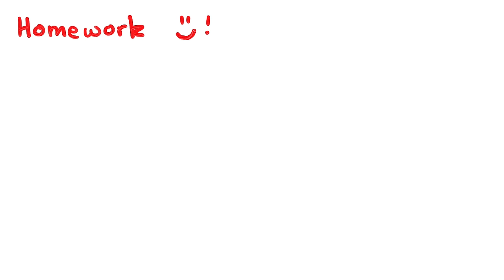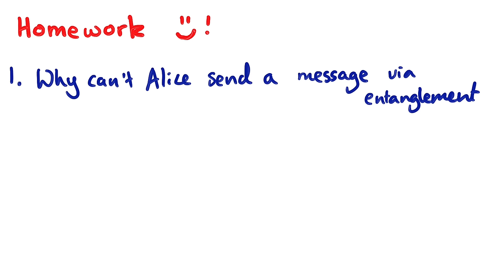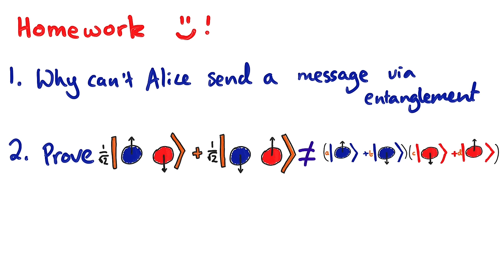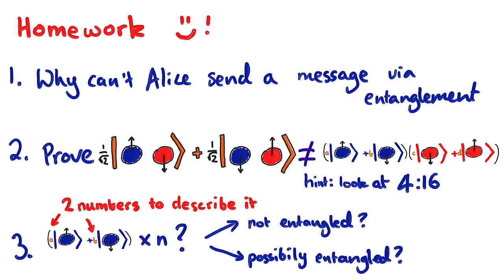So here are some homework questions for you to try and answer in the comments. Firstly, explain why Alice can never send any messages through this setup. Second, this one is to practice working with wave functions of several objects. Prove mathematically that it's impossible to write our state as two separate states for the electron and positron. And third, this one is very relevant to quantum computing. If you have just one electron or positron, you only need two numbers to describe its state. Now suppose that you have n of them. If they're not entangled, how many numbers do you need to describe their state? What about a general state that is allowed to be entangled?